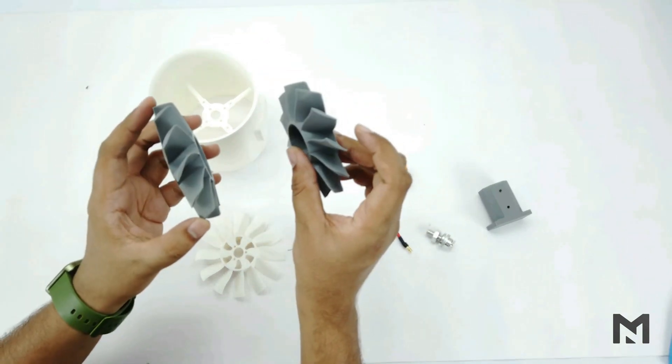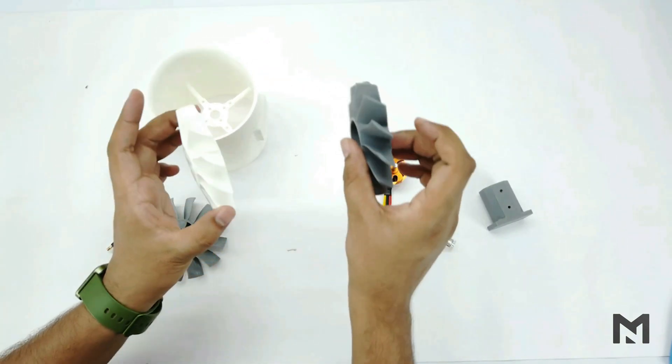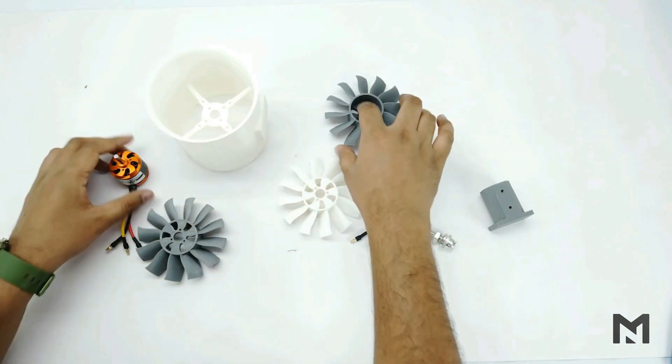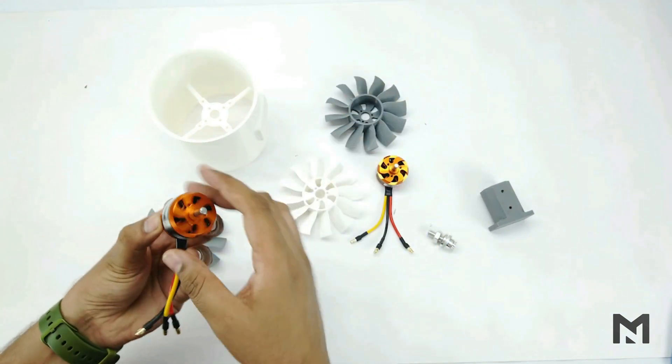I will be using these two for counter rotating propellers. And these two for same direction rotating propellers. So let's start with the 1000 KB motor.